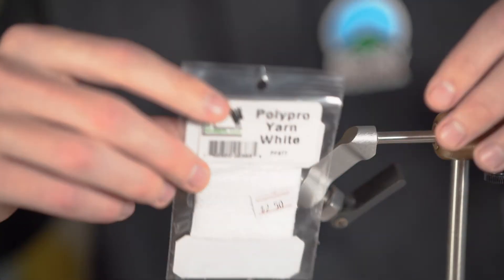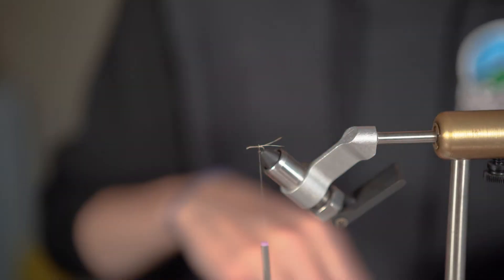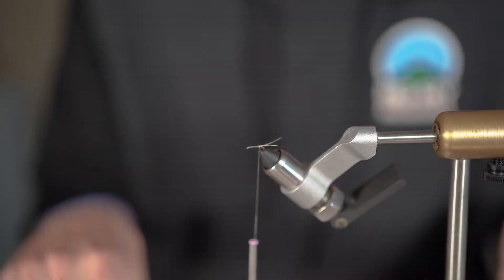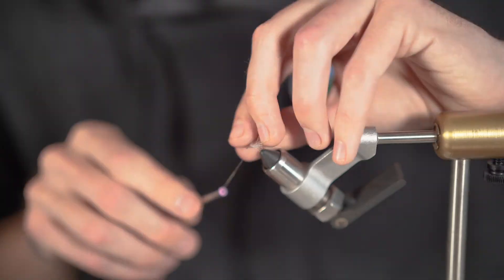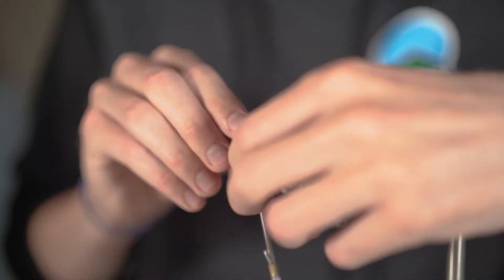Next, grab out the white polypro pack and cut off an inch piece. Place that piece of yarn a third of the way down the shank from the eye and slowly wrap it in. Then wrap to the back of the shank.